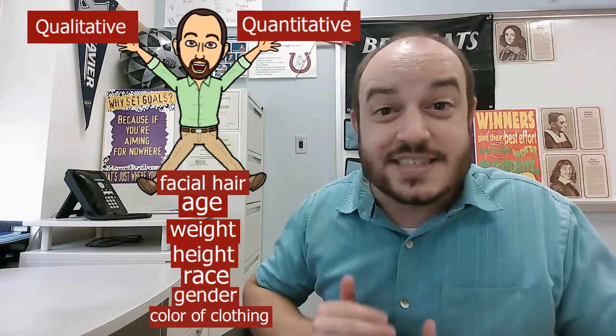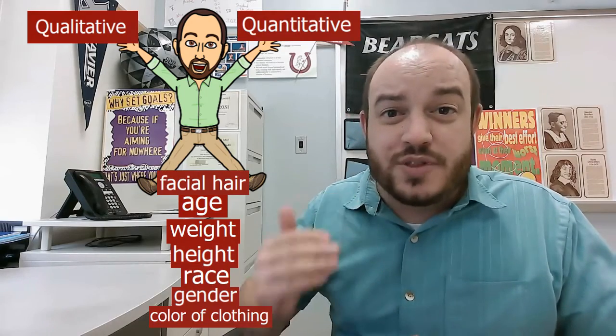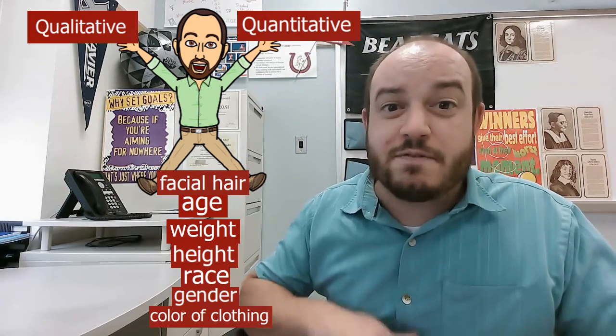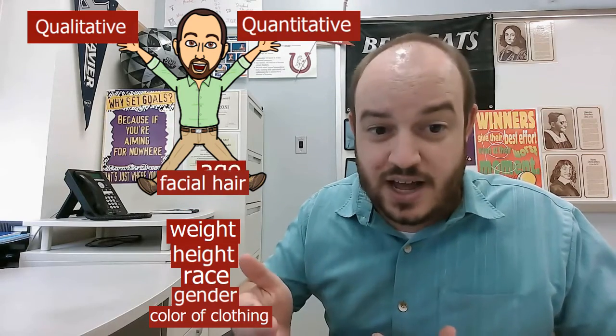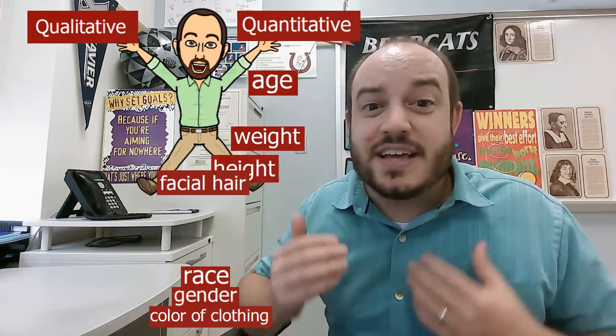These are all variables. They are all things we're able to pull from him. Let's start breaking those down. Remember quantitative is the type of variable that actually measures something. If I'm looking through this list, which things are measuring something about this guy? Well first off, we have age which is measuring how long he's been alive.